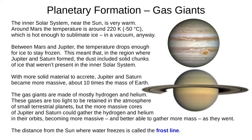Now for the gas giants. The inner solar system near the Sun is very warm. Around Mars, the temperature is 220 Kelvin, or minus 50 degrees Celsius, which is hot enough to sublimate ice, turning it into vapour — this isn't true on Earth, but it is in a vacuum. Between Mars and Jupiter, the temperature drops enough for ice to stay frozen. This means that in the region where Jupiter and Saturn formed, the dust included solid chunks of ice that weren't present in the inner solar system. With more solid material to accrete, Jupiter and Saturn became more massive, about 10 times the mass of Earth. The gas giants are made of mostly hydrogen and helium — these gases are too light to be retained in the atmospheres of smaller terrestrial planets, but the more massive cores of Jupiter and Saturn gathered up the hydrogen and helium in their orbits, becoming ever more massive and ever better at gathering more hydrogen and helium.